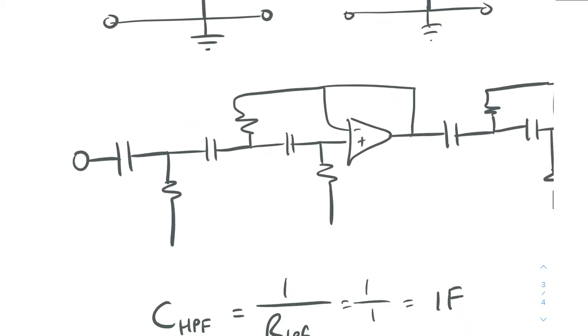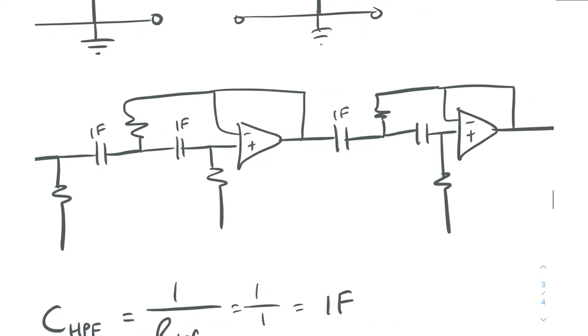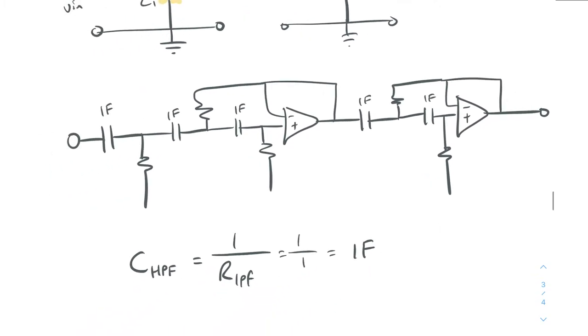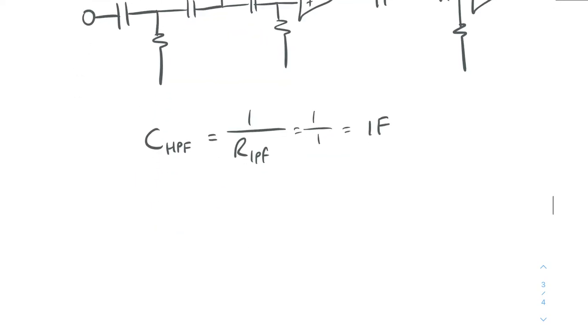So all of our capacitors up here, they're all going to have a value of one farad. So this is obviously, these are the normalized values before they're scaled. One farad, one farad. That's it. Okay, now we just need to find the resistor values, which again, super, super easy.